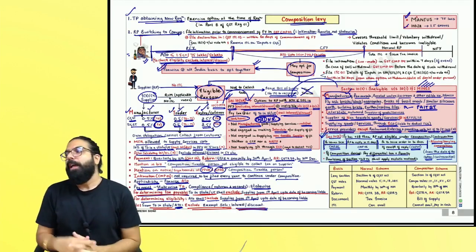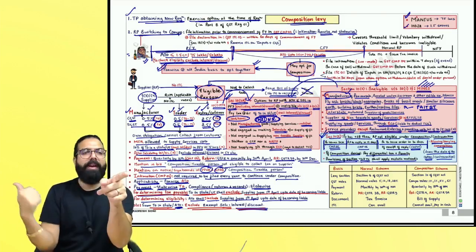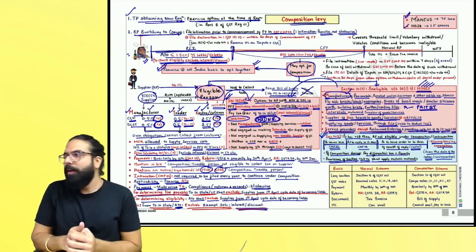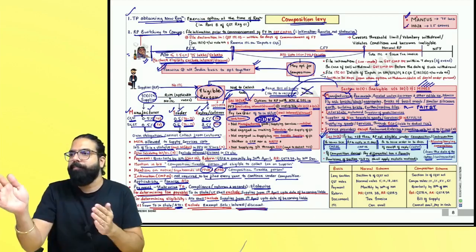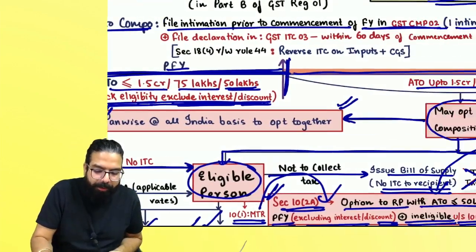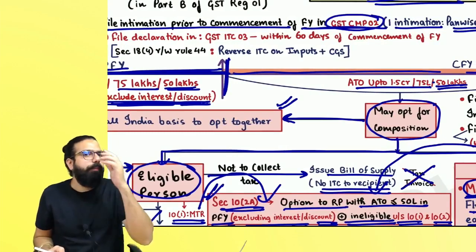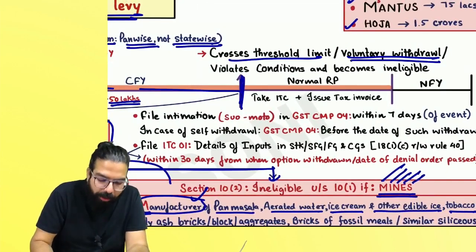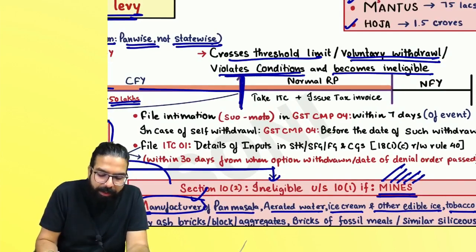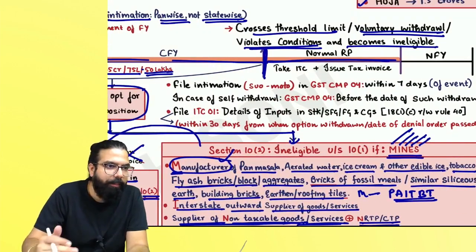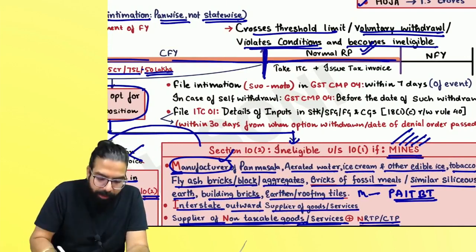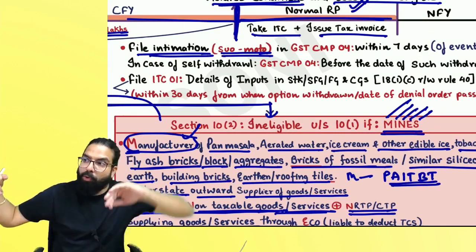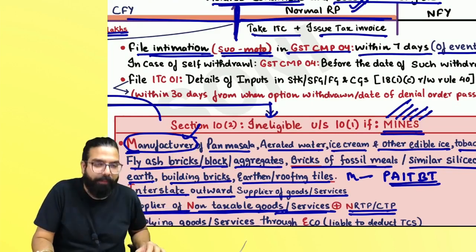If you cross the threshold limit, or you voluntarily want to withdraw, or you violate the condition and become ineligible — from the day you violate or become ineligible — you are a normal person. You must take ITC and charge GST. And you should go online suo motu and file CMP-04 within seven days of the event. Coming in to composition must be at the beginning of the year only (except for new registrations). Going out has no such time restriction — you can go out in between the year.